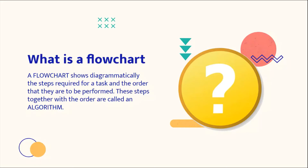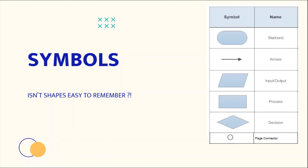A flowchart shows diagrammatically the steps required for a task and the order in which they are to be performed. These steps together with the order are called an algorithm. Here are some symbols you have to remember: an oval represents a start or end point; a line or arrow is a connector that shows relationships between shapes; a parallelogram represents input or output; a rectangle represents a process.